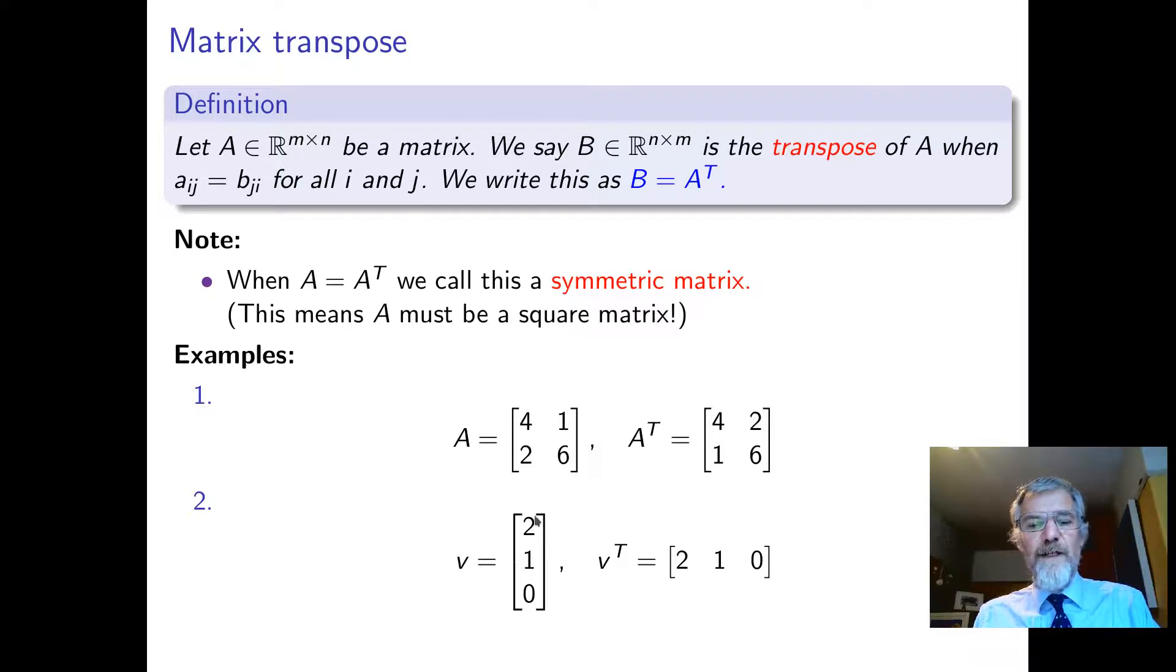What was a column is now a row. We just swap all the rows and columns. If you transpose a column vector, you get a row vector. It's written as a superscript T. Some authors also use dash, for example, for transpose, or a few other symbols.